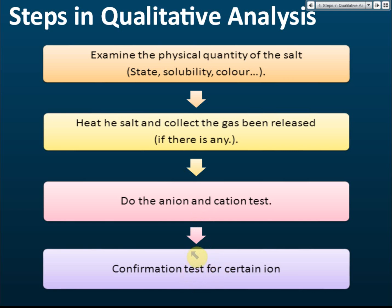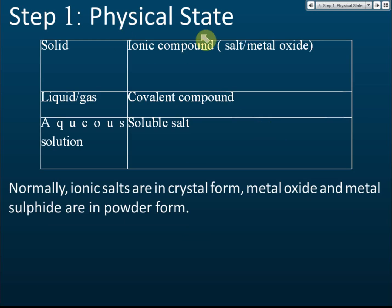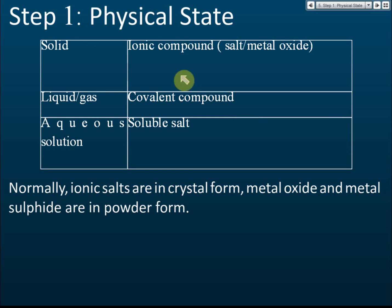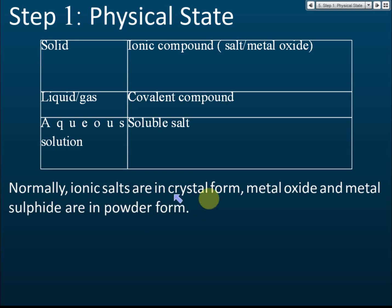For physical state: if it's a solid, then most probably it is an ionic compound, because ionic compounds have high melting points and at room temperature usually exist as solids. If it's a liquid or gas, then most probably it is a covalent compound. If it's an aqueous solution, then most probably it is a soluble salt. Salts are normally in crystal form, while metal oxides and metal sulfites are in powder form. If it's crystal form, it's usually a salt; if powder form, it's usually an oxide or metal sulfite.